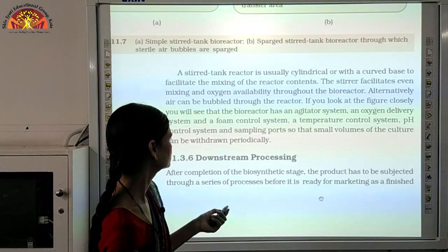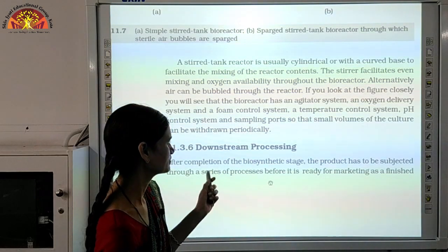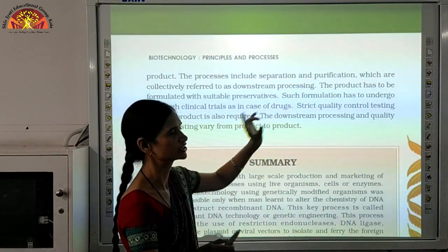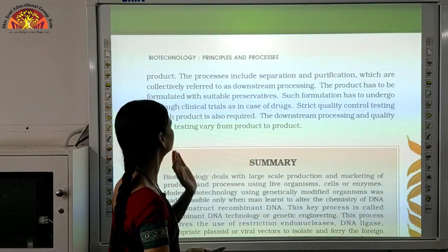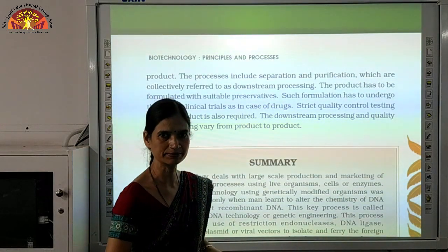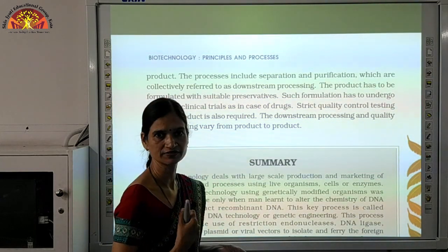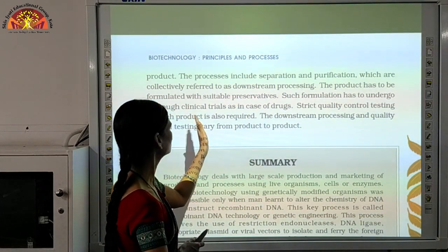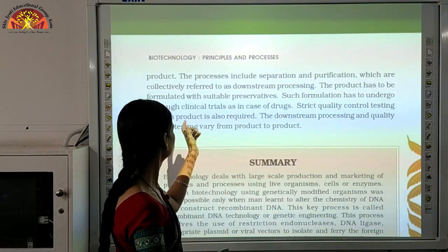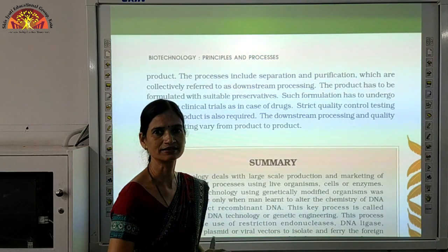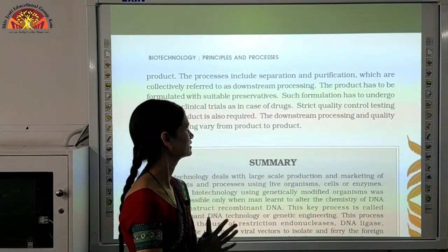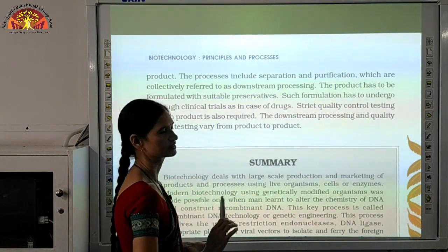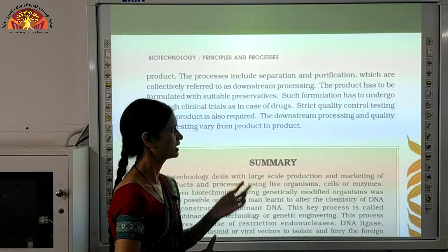One more process we use is downstream processing — done before the product is ready for marketing. This includes 2 steps: separation and purification. The product will be formulated — for example, if it is a syrup, preservatives will be added so it does not spoil. After purification and separation, such formulations must also undergo clinical trials, especially in the case of drugs and medicines. Then strict quality control testing for each product is also required.